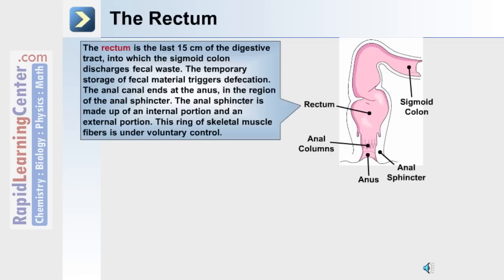The last segment of the digestive system is the rectum. The sigmoid colon turns and forms the rectum, and at the end of the rectum is the anus. Surrounding the anus is the anal sphincter as well as anal columns. The rectum itself is the last 15 centimeters of the digestive tract into which the sigmoid colon discharges. The rectum temporarily stores fecal material, which triggers defecation. The anal canal ends at the anus, where the anal sphincter is made up of an internal and external portion plus a ring of skeletal muscle fibers, and is under voluntary control.